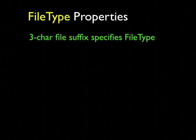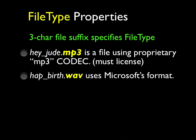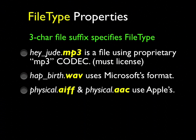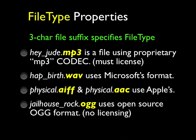How about file type properties? The three-character file suffix specifies the file type. A song labeled HeyJu.mp3 is a file using the MP3 codec. Since MP3 is proprietary, any software that uses it must license that codec. Similarly, HappyBirthday.wav uses Microsoft's WAV format. Apple formats AIFF and AAC are also commonly used. For software that desires to get away from proprietary formats requiring licensing, the OGG format can be used — for example, jailhouserock.ogg.